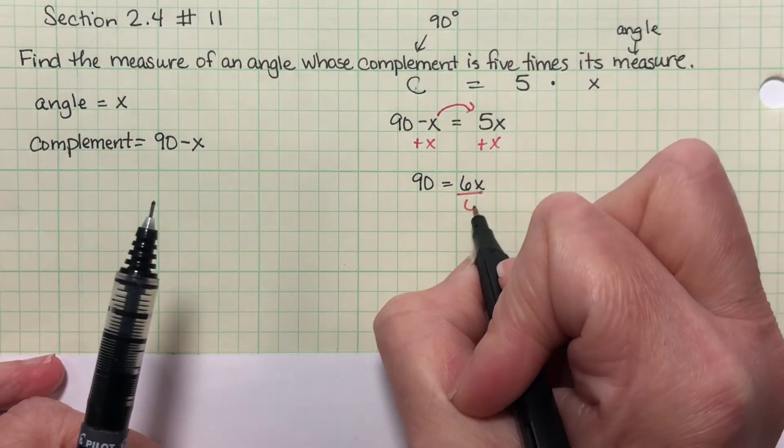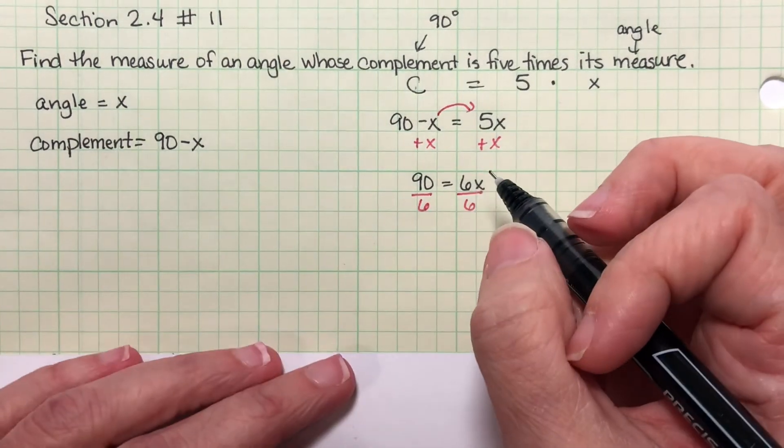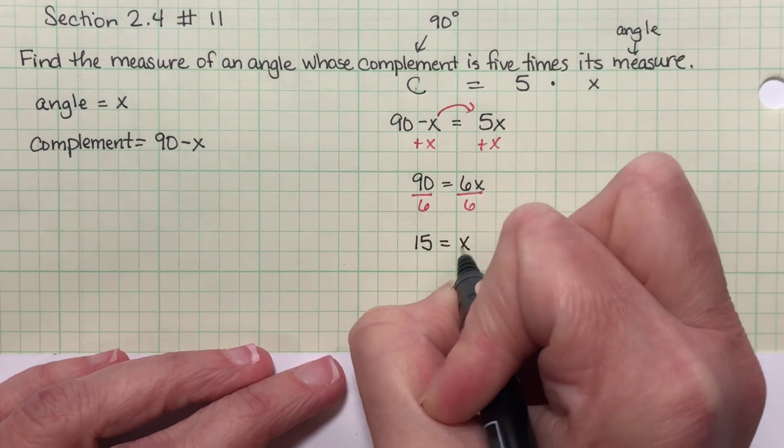Divide both by 6, and 90 divided by 6 is 15 equals X.